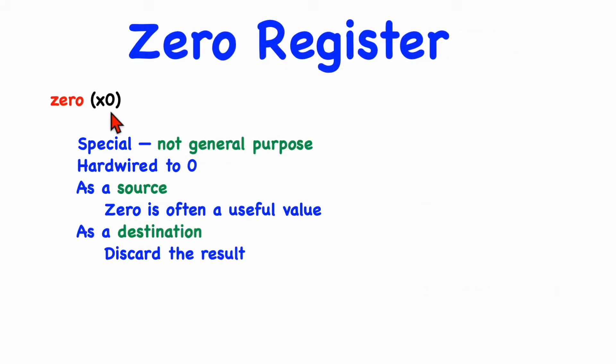The register X0 has the alternate name of simply zero. This register is particularly interesting because it's the only one that is not general purpose. It's treated specially by the hardware and, in particular, it's hardwired to always contain the value zero. This register can be used as a source register in any instruction where you want the value zero, which is often quite useful. And it can also be used in instructions as the destination register when you don't want the result, in which case the result of the instruction is simply discarded.